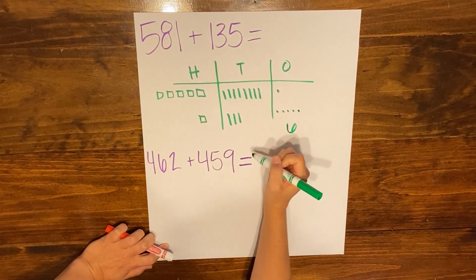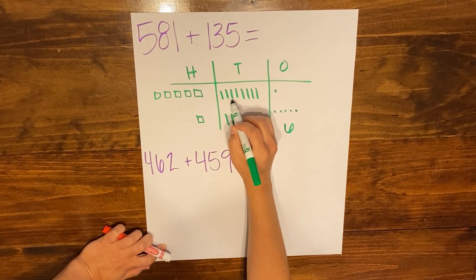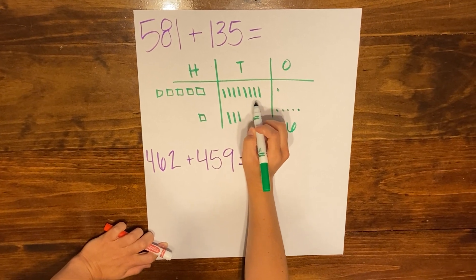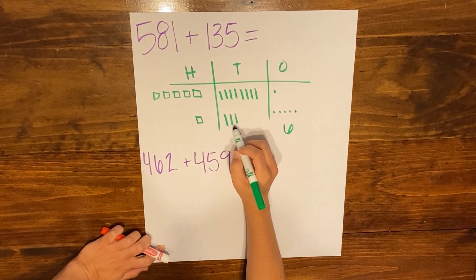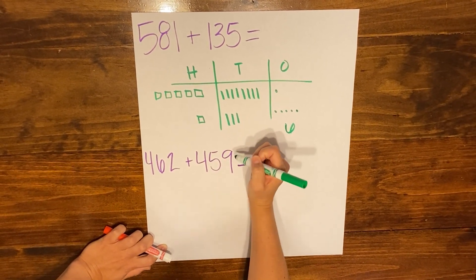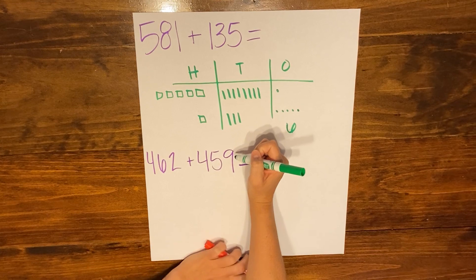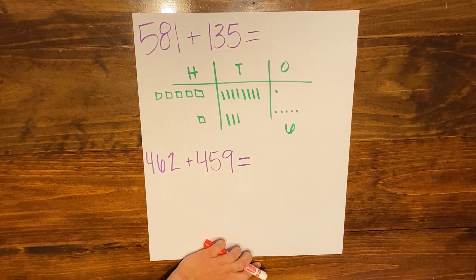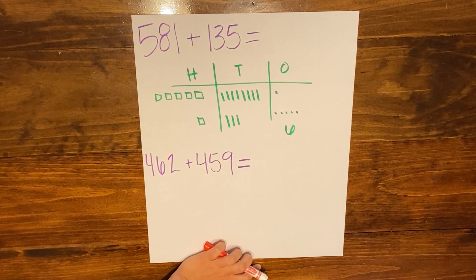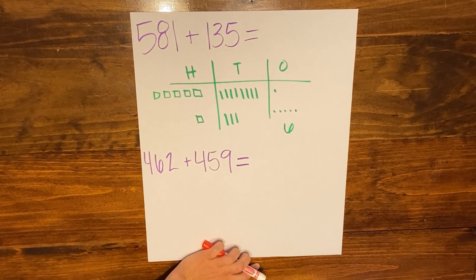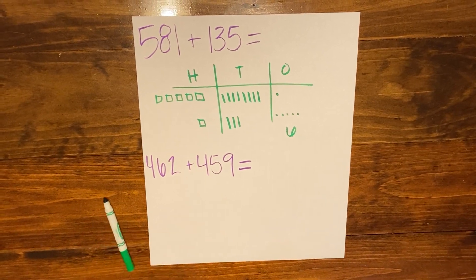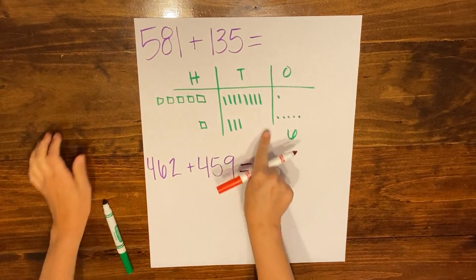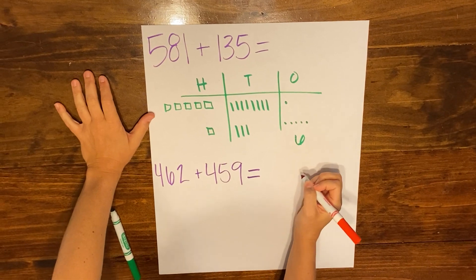When I look at my tens, I count 1, 2, 3, 4, 5, 6, 7, 8, 9, 10, 11. Now we know that we can't have 11 tens in the tens column, so I'm going to need to regroup.